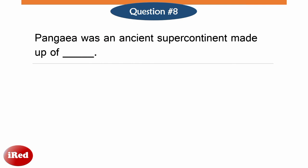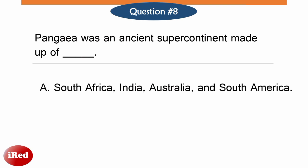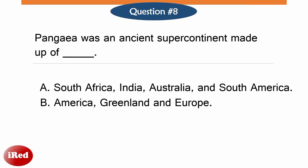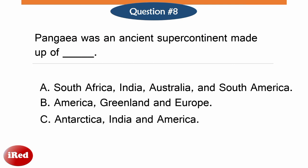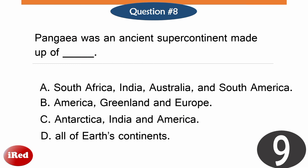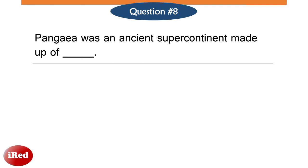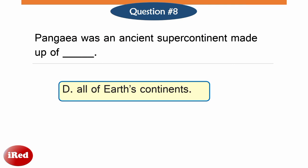Pangea was an ancient supercontinent made up of: Letter A — South Africa, India, Australia, and South America. Letter B — America, Greenland, and Europe. Letter C — Antarctica, India, and America. Or letter D — all of the Earth's continents. The correct answer is letter D: all of the Earth's continents.